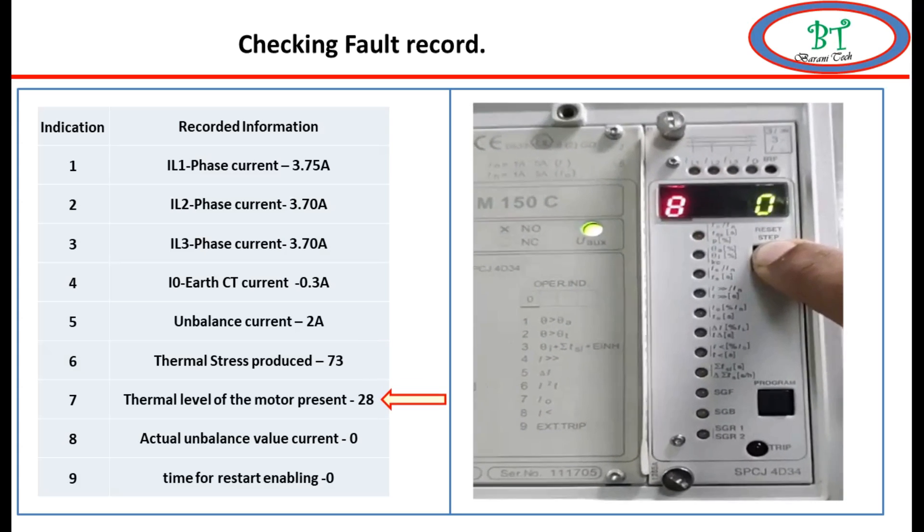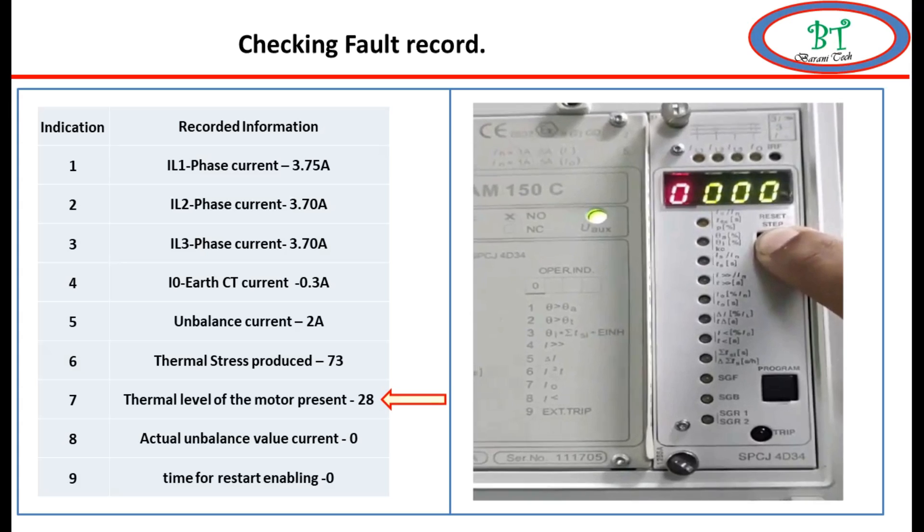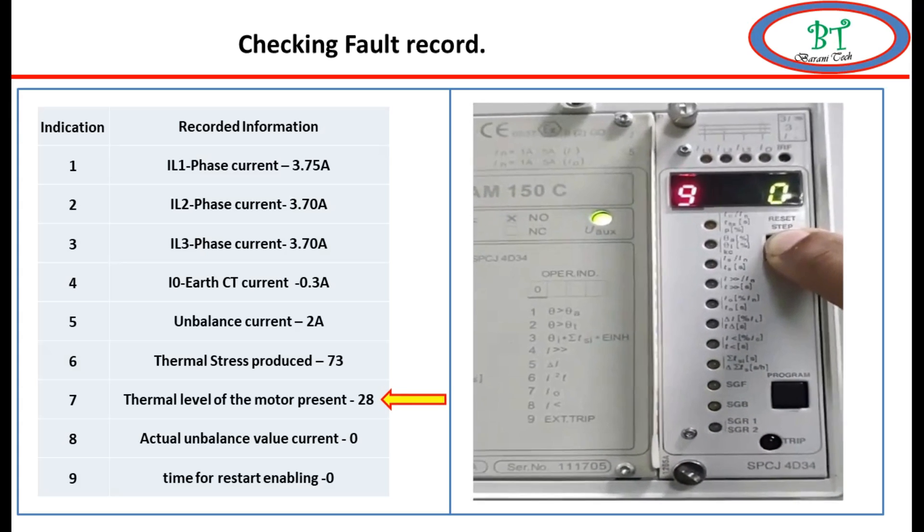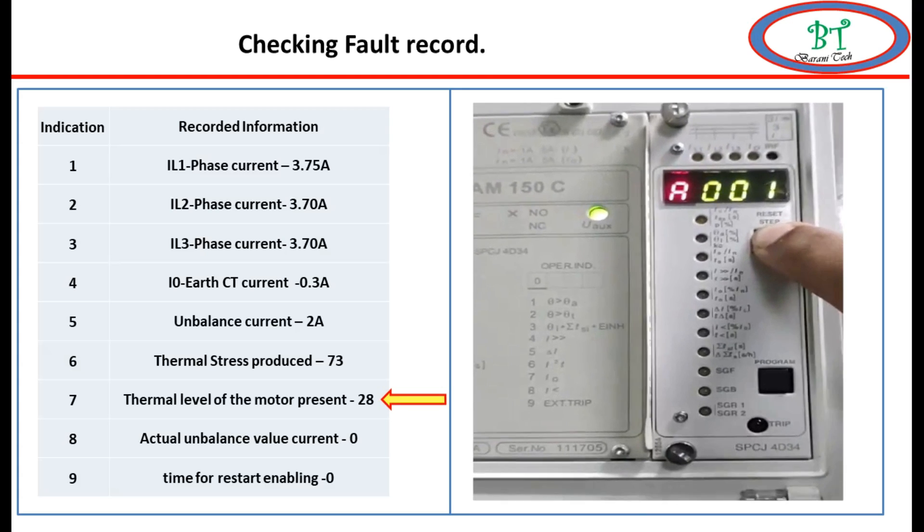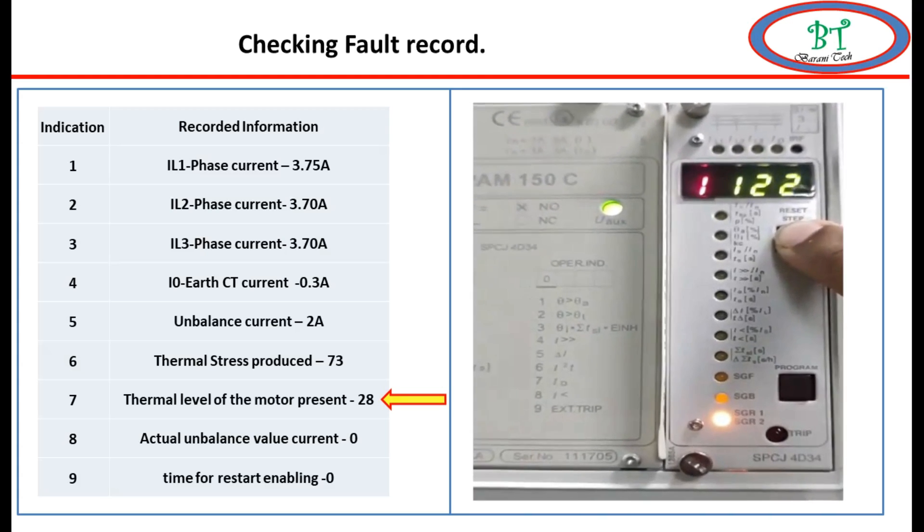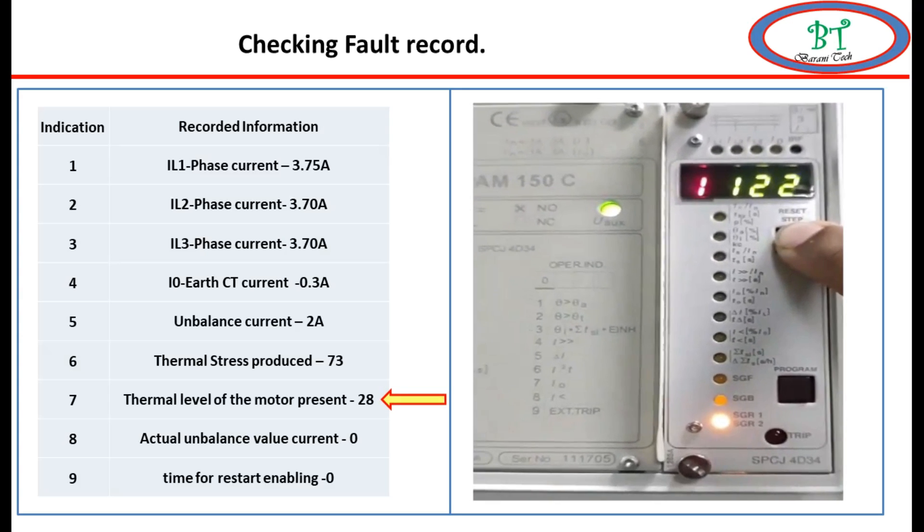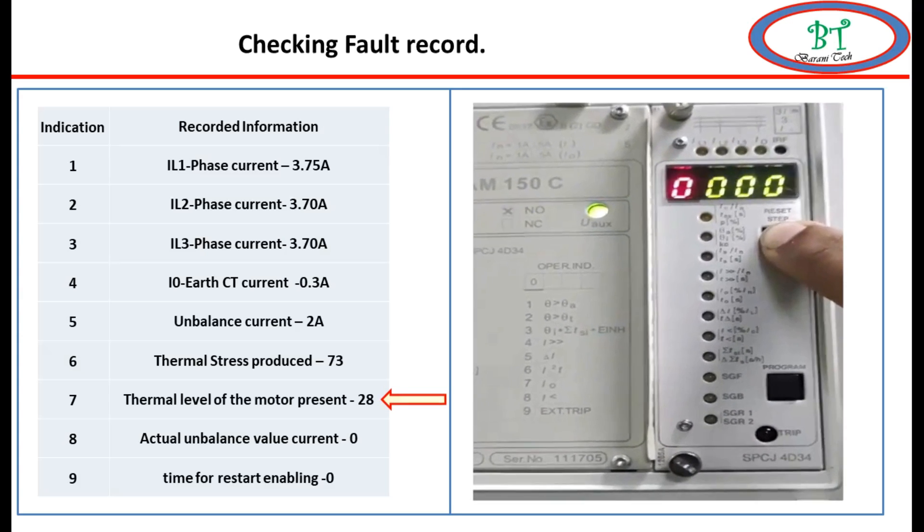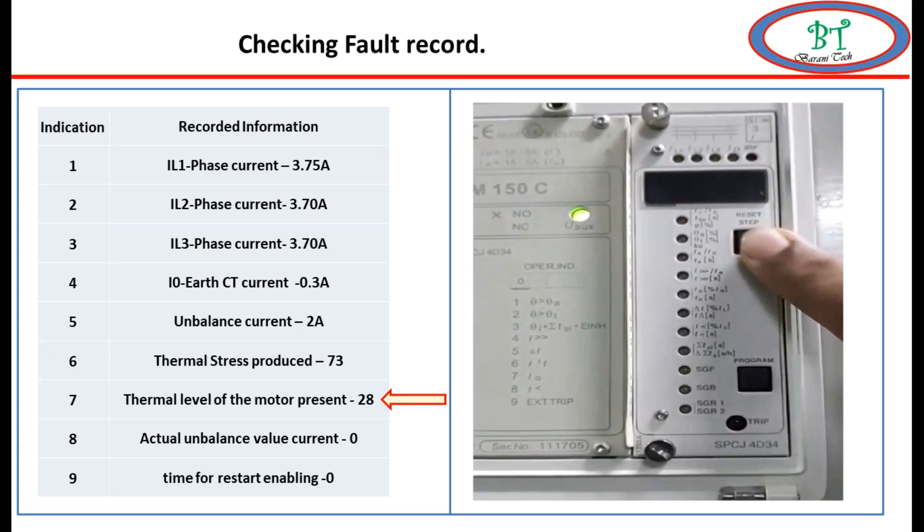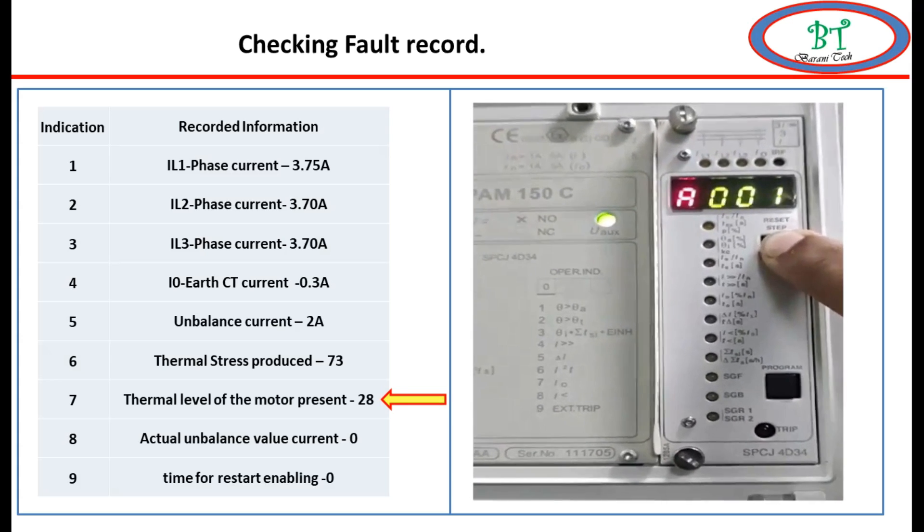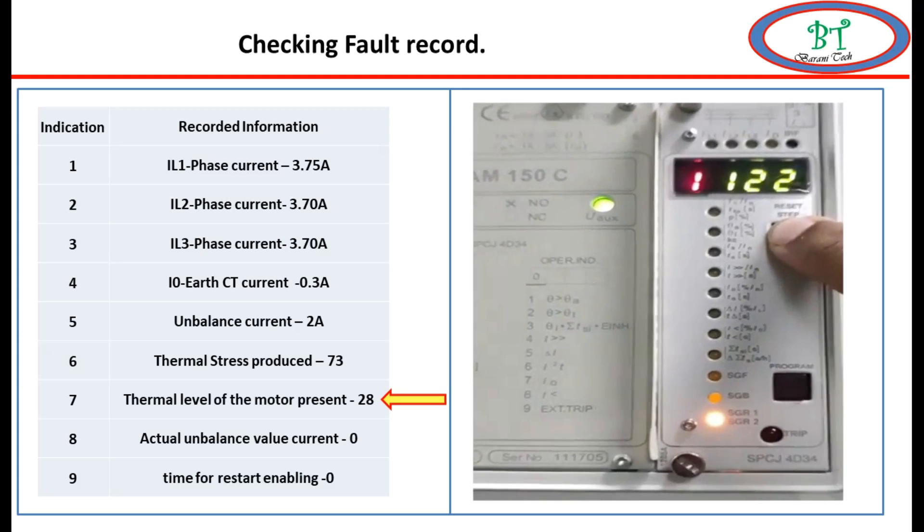Seventh indication is the thermal level of the motor present. That means how much motor thermal level is right now. When we start the motor, if the thermal level reaches above 80 or 90 and it is stopped, then next start cannot be possible until it reaches below the reset thermal value, that is theta i.